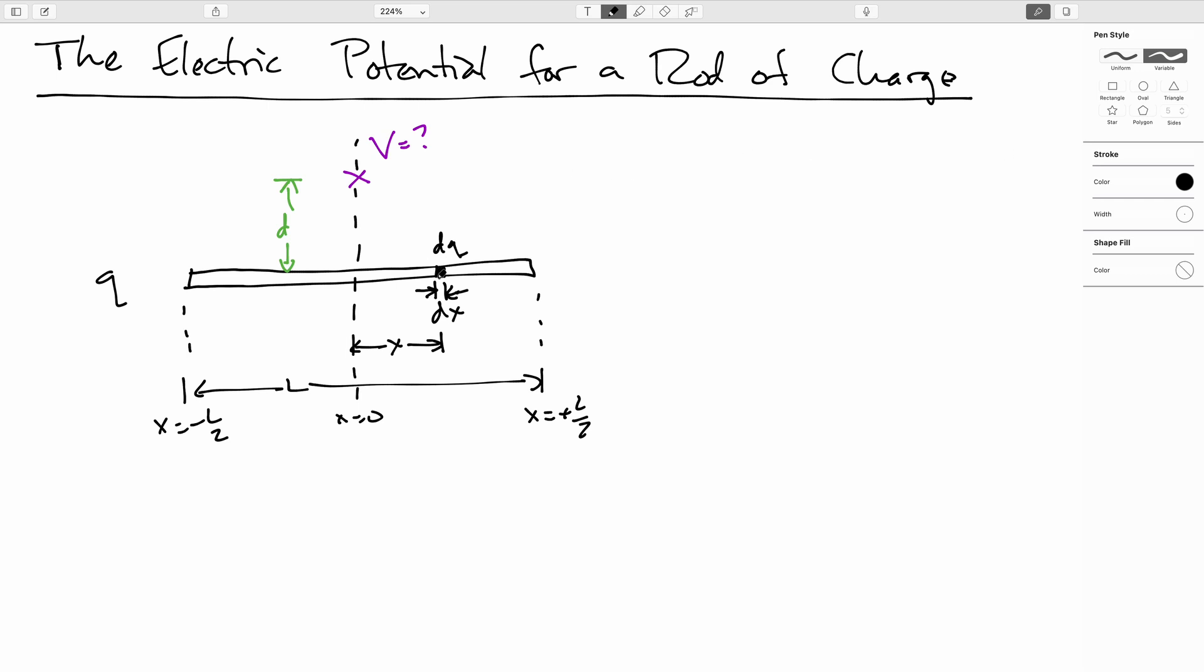We'll say that this chunk of charge right here makes a differential contribution to the electric potential at this point equal to DV. And that will be equal to K. We'll get all fancy and write as 1 over 4 pi epsilon naught this time. And then our differential chunk of charge here is DQ. And we're going to say over R, but we have to figure out how to express our R in terms of our integrating variable.